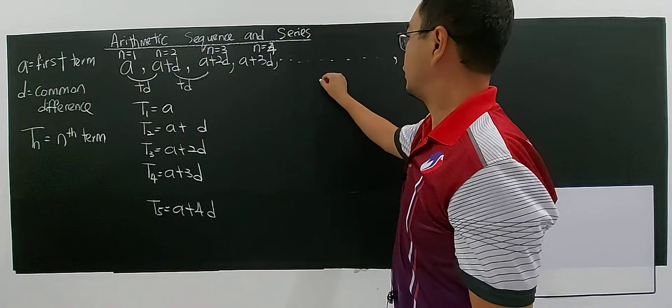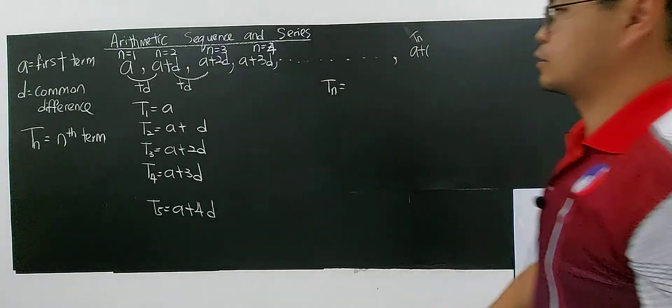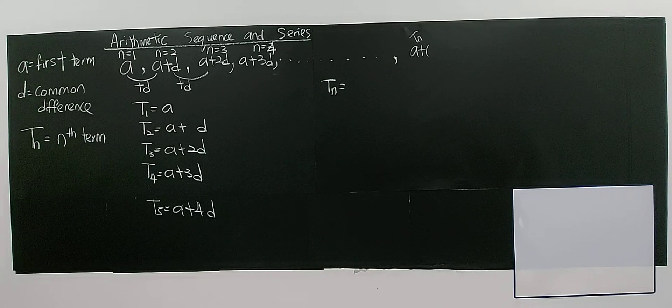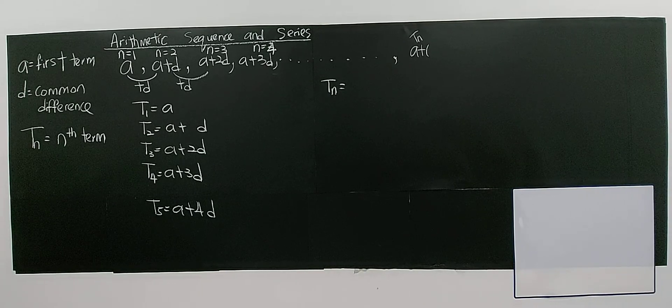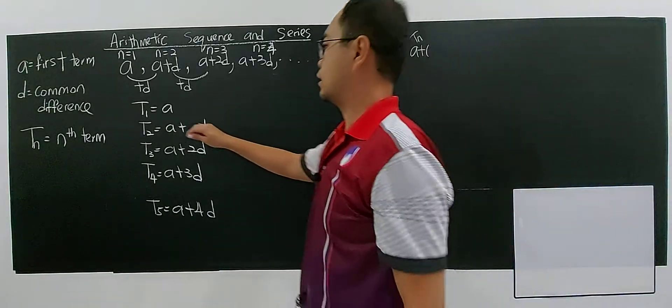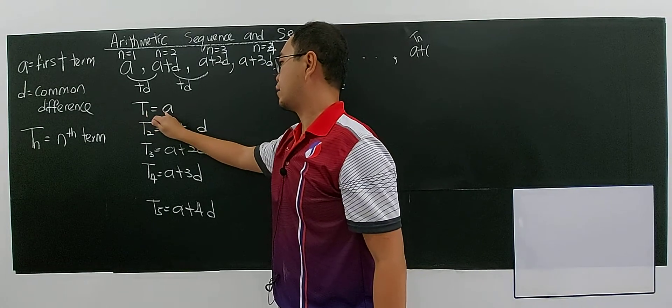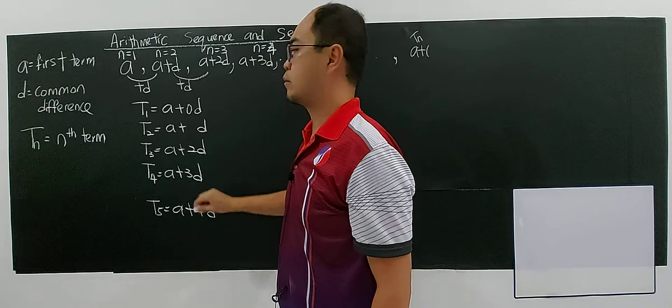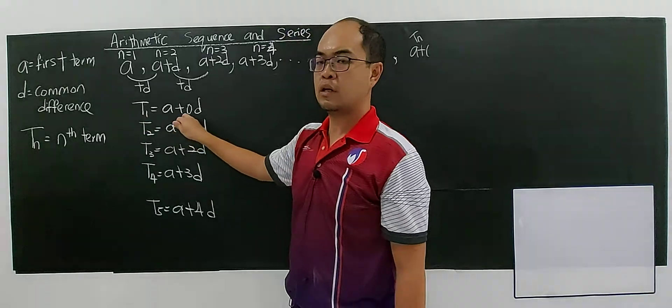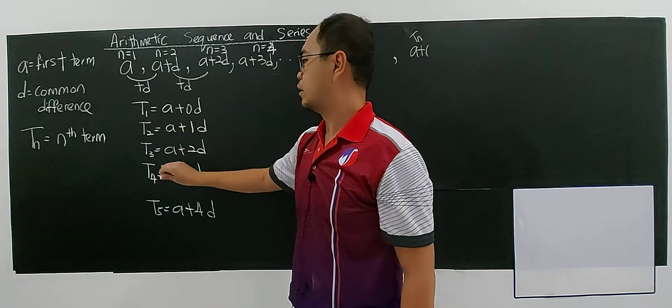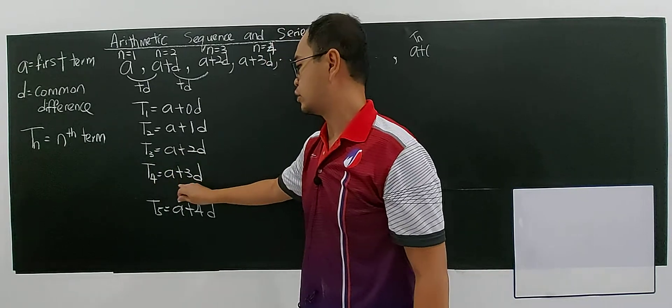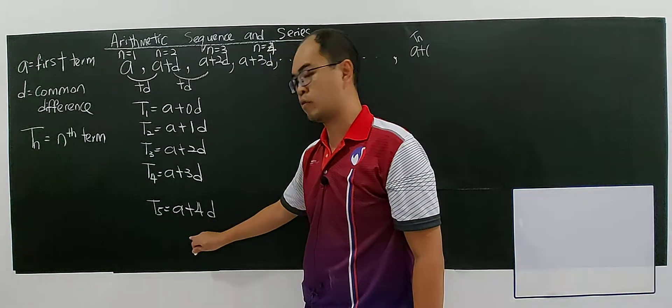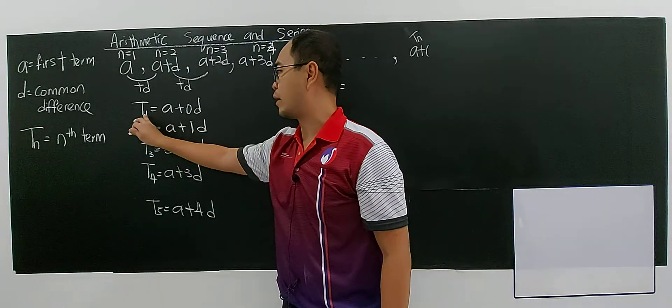I want to ask you, what happens if you have the nth term? You must do some induction, argumentative induction. You see, if you have 1, you have A, which means there is a 0D here. If 1, here will be 0. If 2, here will be 1. If 3, here will be 2. If 4, here will be 3. If 5, here will be 4. How about 6? It will be 5. It will be less by 1.